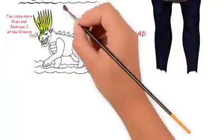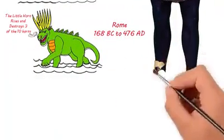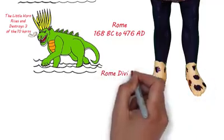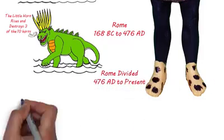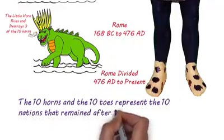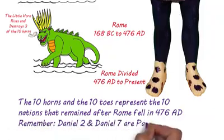Daniel says, in this horn were the eyes like the eyes of a man, and a mouth speaking great things. In our last program, we learned the ten toes of Daniel 2 were the ten barbaric nations which brought about the destruction of pagan Rome. Those toes are the same as the ten horns on the fourth beast of Daniel 7.